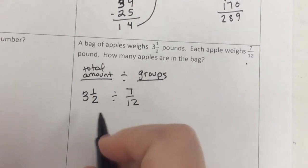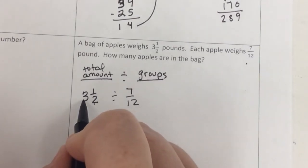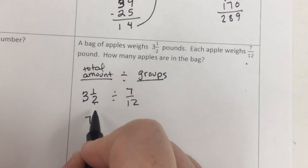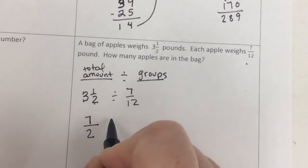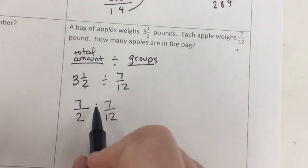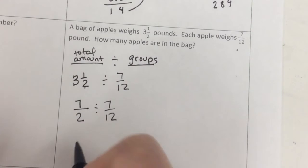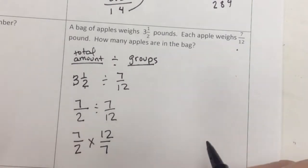So now I need to make them improper. So 2 times 3 is 6, plus 1 is 7. Be careful. I'm noticing a lot of people make your denominator 1. It's not the same as 7 over 1. It's 7/2. Divided by 7/12. I haven't done any math yet. I haven't flipped anything. When I change it to multiplication is when I flip my second fraction only.